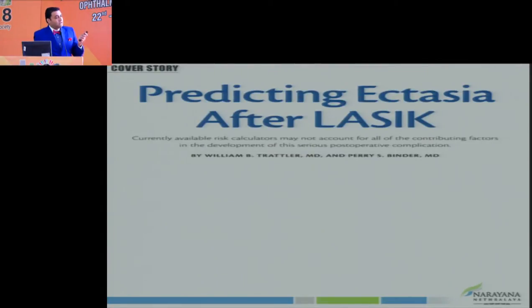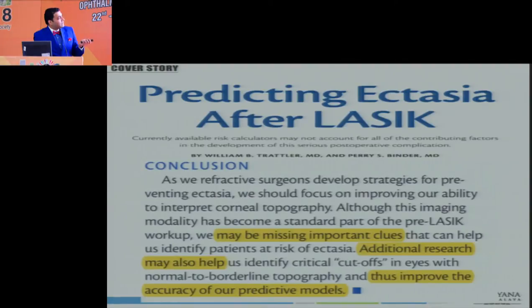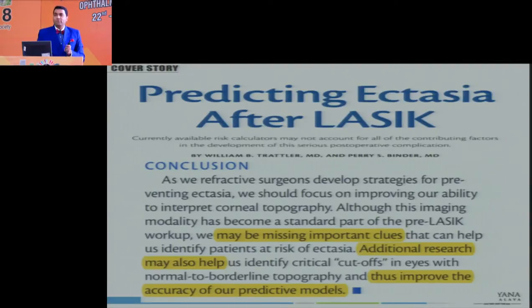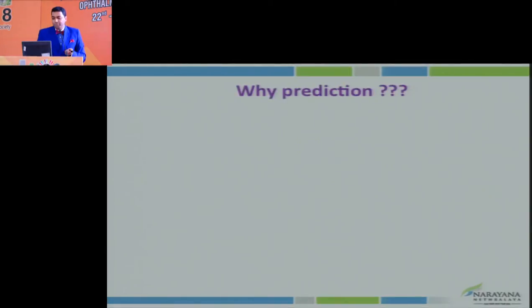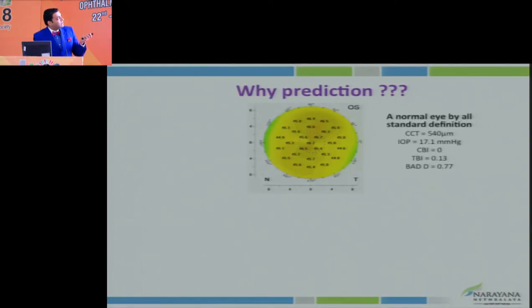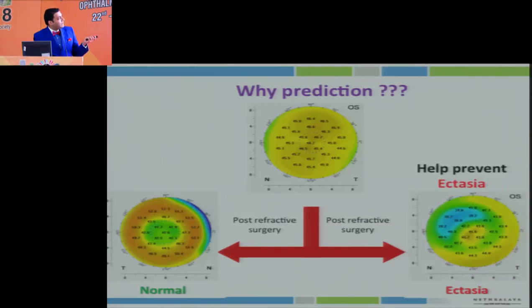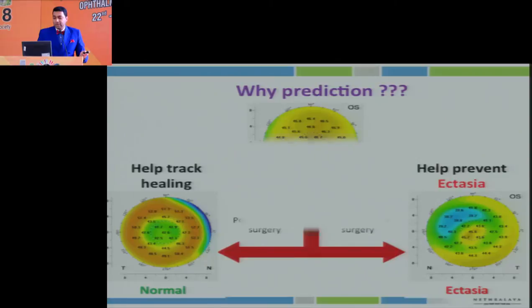If I concentrate on refractive surgery, there is a lot of data about what can predict, but the literature also says we do not know — virtually every predicting model says we need more data to analyze. Why you need prediction is illustrated by a seemingly normal-looking topography: one goes into ectasia, the other undergoes a normal procedure. That is the real need — why we need prediction and tracking.